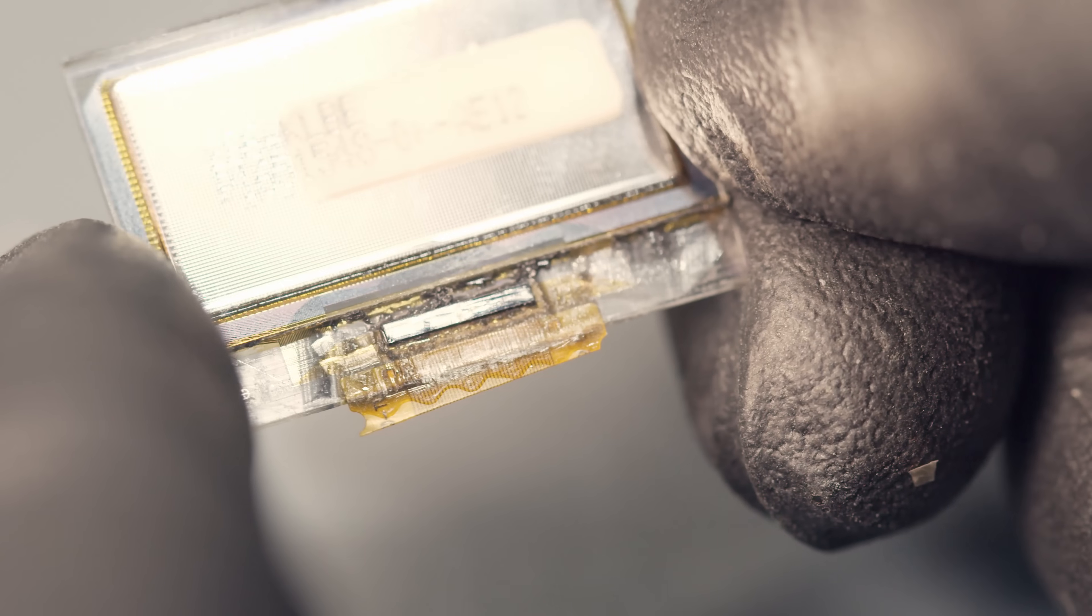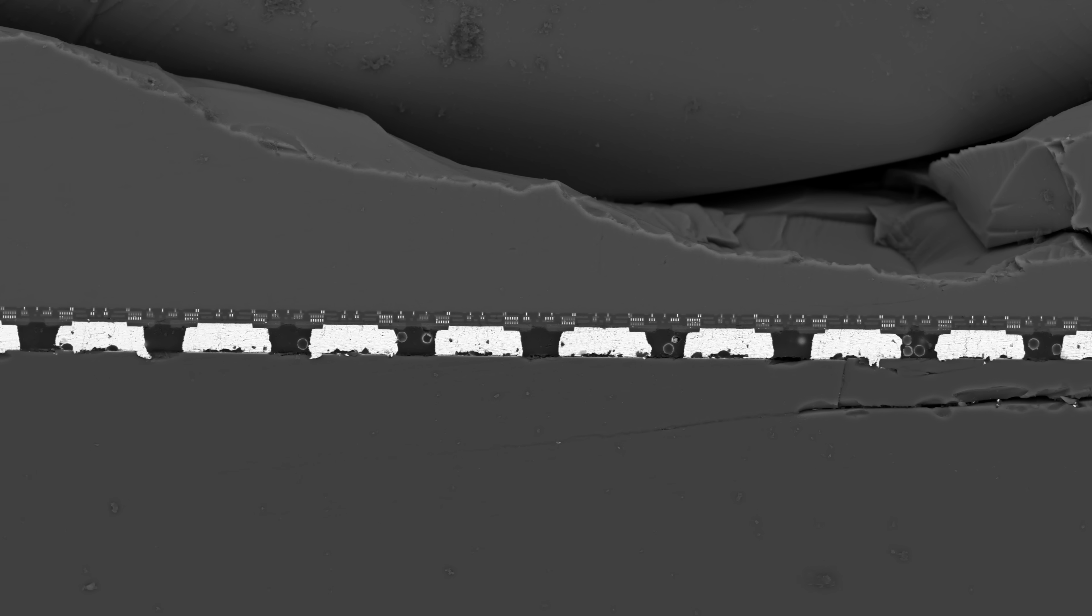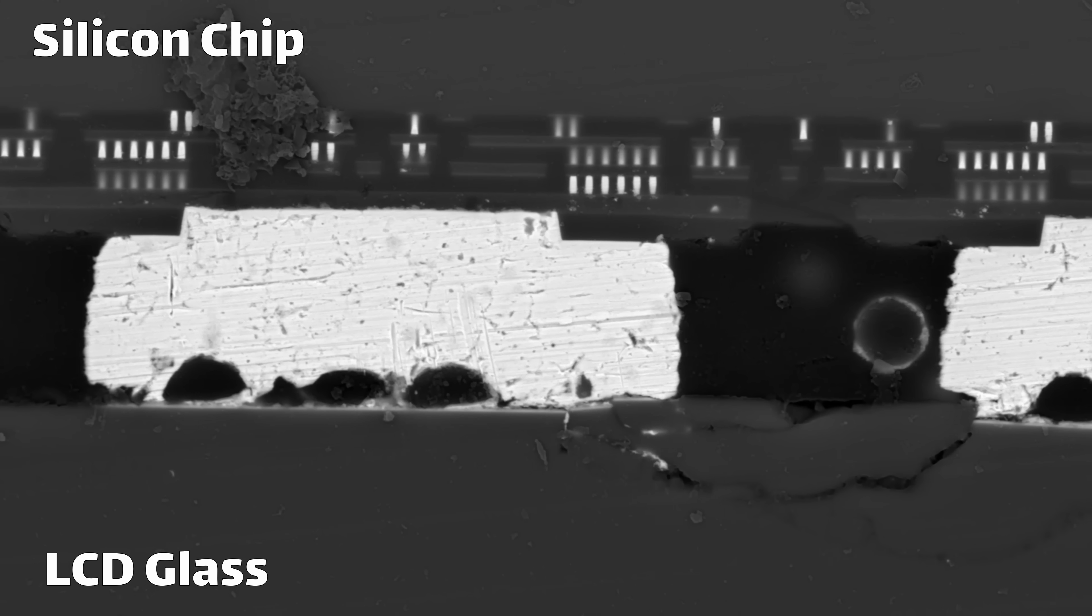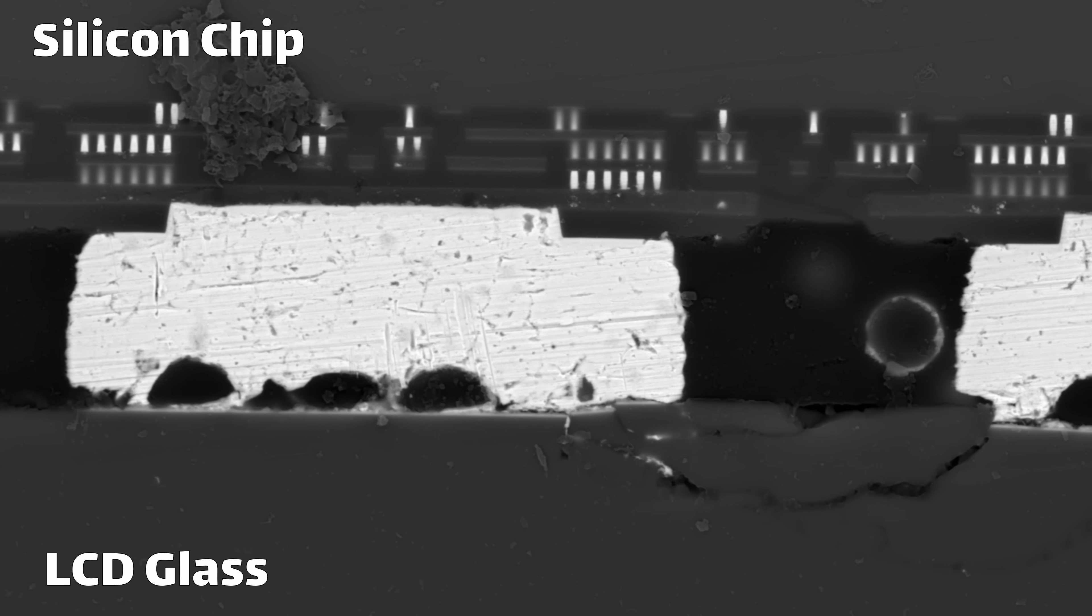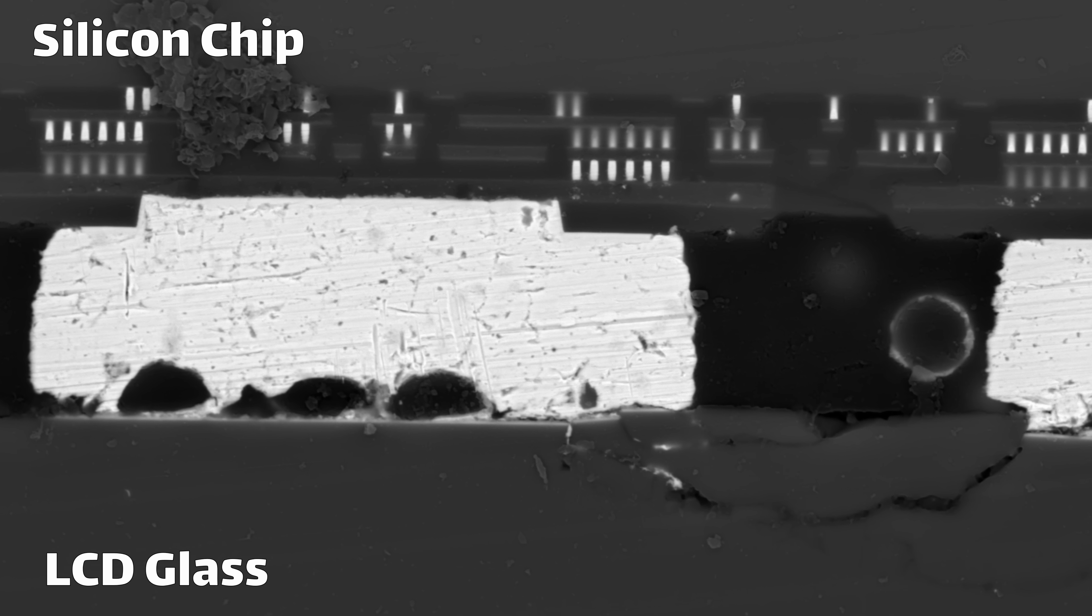I also made another cross section a little further up, cutting through the silicon microchip. And here it's a similar story, although with much tighter tolerances. The silicon chip is on top here and the glass is on the bottom. The pads and the gaps between the pads are much, much smaller. And the gap between the glass and the silicon itself is also very small.